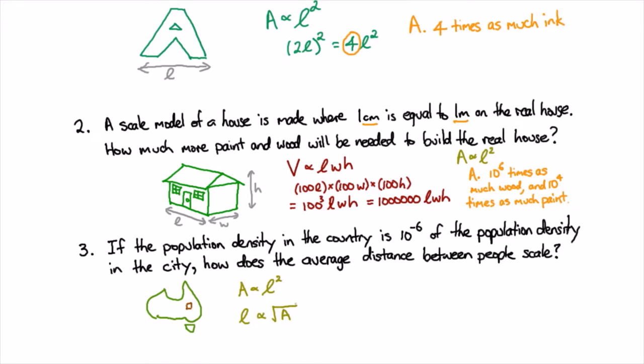So then we realize that if the area has gone down by a factor of 10 to the minus 6 then the length must have gone down by the square root of that and since the square root of 10 to the minus 6 is 10 to the minus 3 what that means is that people are a thousand times further apart in the country than they are in the city.